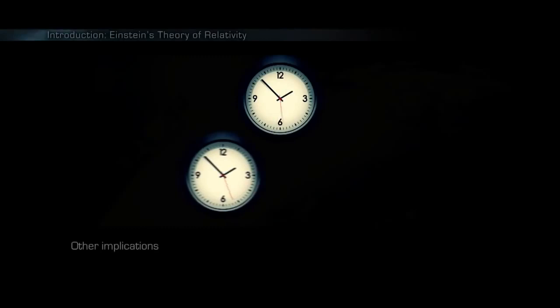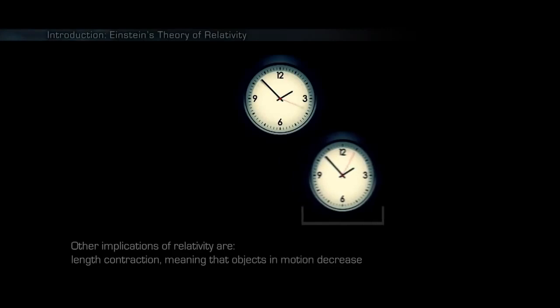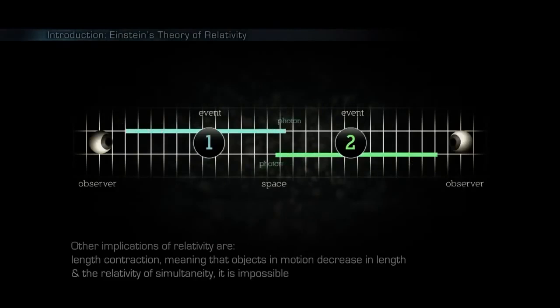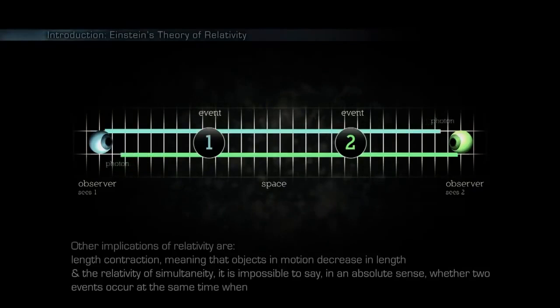Time dilation is best illustrated by how moving clocks run slower. Other implications of relativity are length contraction, meaning that objects in motion decrease in length, and the relativity of simultaneity. It is impossible to say in an absolute sense whether two events occur at the same time when they are separated in space.